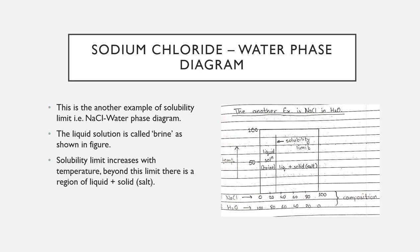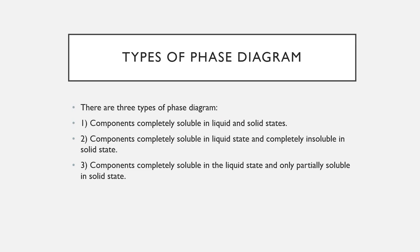Another example of solid solubility is the sodium chloride (NaCl) and water phase diagram. The liquid solution is called brine. The solubility limit increases with temperature; beyond this limit there is a region of liquid plus solid. The solubility limit of NaCl decreases with temperature.